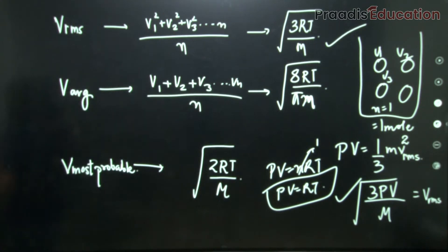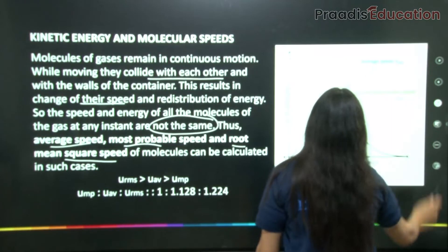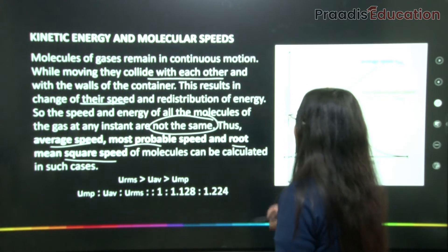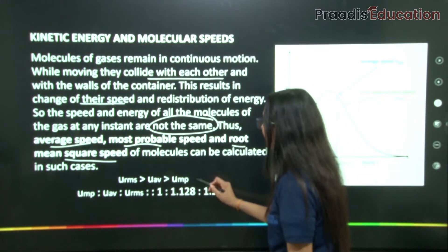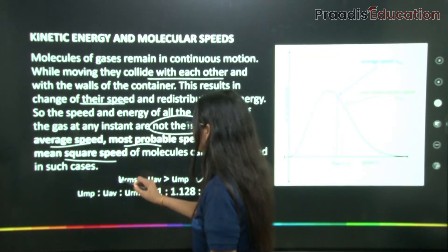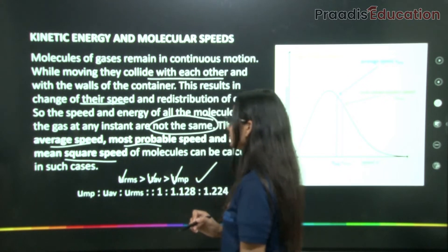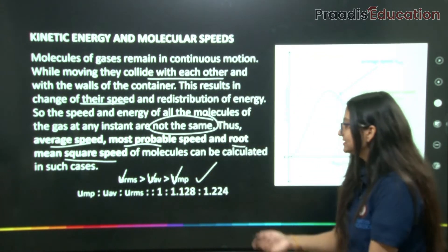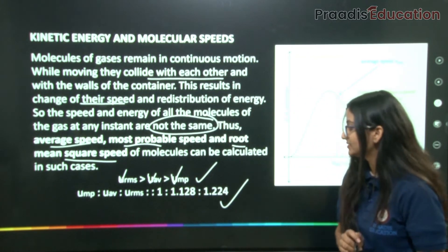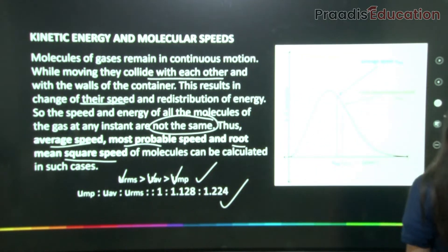This covers molecular speeds. For exams, remember the order: v_rms is the largest, followed by v_average, and then v_most_probable. In some cases, examiners ask for the ratio of these speeds, so remember this order of their magnitudes.